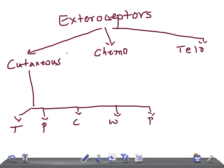The touch receptors are Meissner's corpuscles and Merkel's disc. The pressure receptors are known as Pacinian corpuscles.